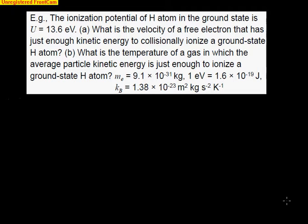We're back with another question from our astrophysics class. The ionization potential of a hydrogen atom in the ground state is 13.6 electron volts. This is actually internal energy but equals 13.6 eV. So it takes 13.6 electron volts of energy to completely ionize a hydrogen atom that's in the ground state. First, part (a) asks: what is the velocity of a free electron that has just enough kinetic energy to collisionally ionize a ground state hydrogen atom?